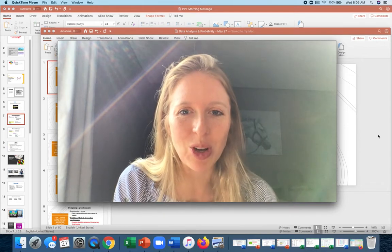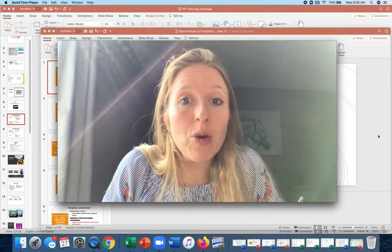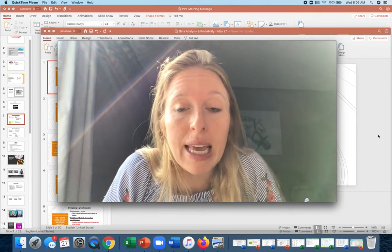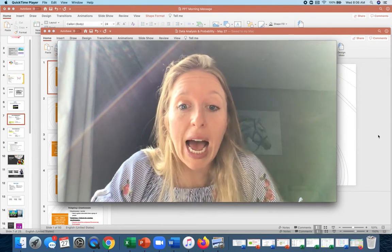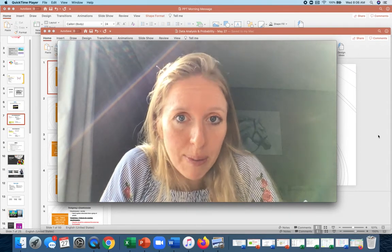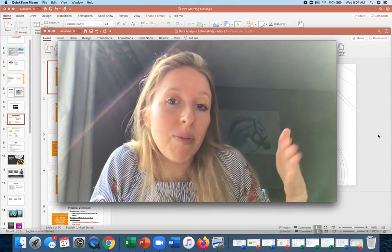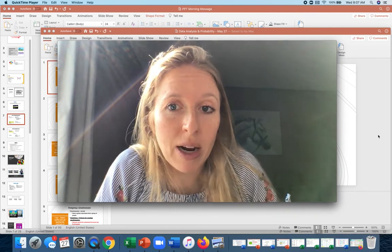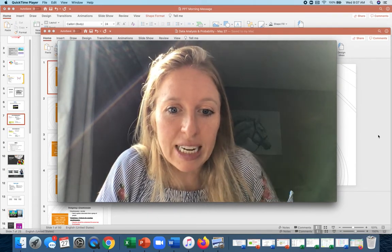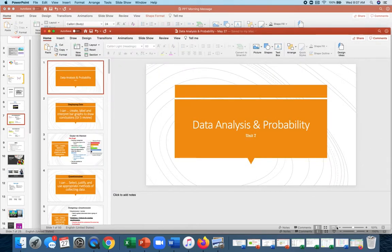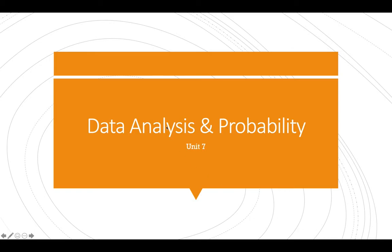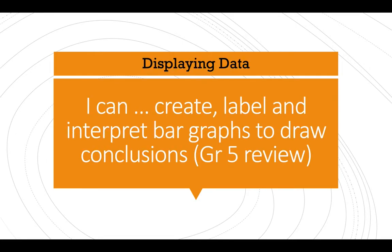Today we are getting into our new unit, so you need to go to a new page in your math notebook. Remember, if you are running out of space, your parent or guardian can go to the school — Miss Jan has a whole stack of grade six math notebooks at reception. Today's topic is called Data Analysis and Probability. Write that at the top of the page along with today's date, May 27th. This is our seventh unit, and coincidentally it is chapter seven in our textbook.